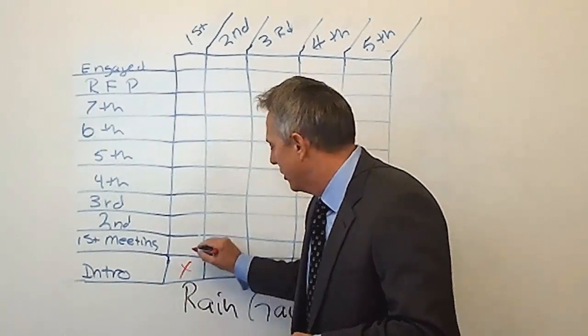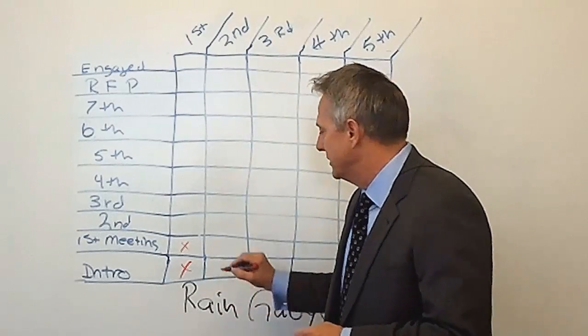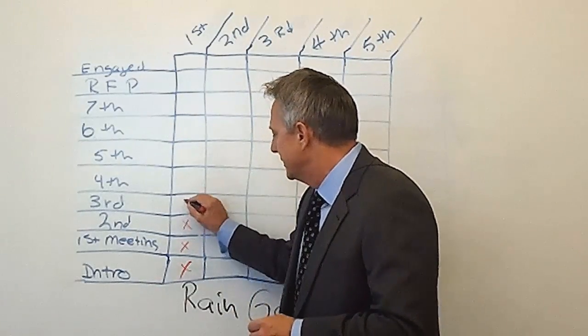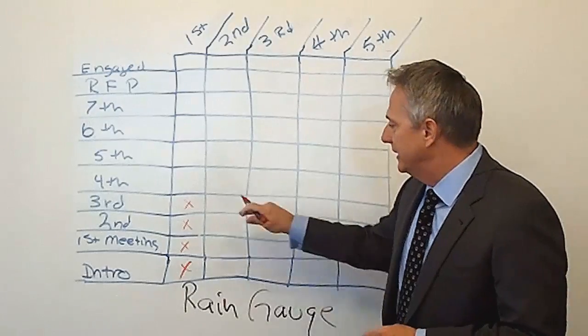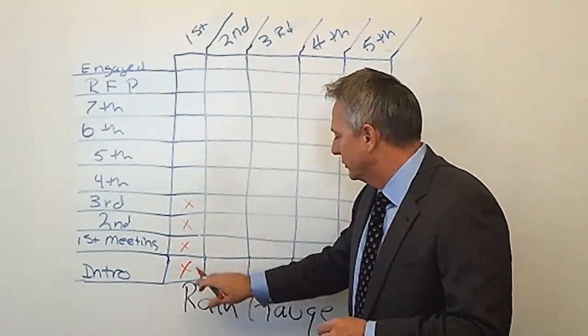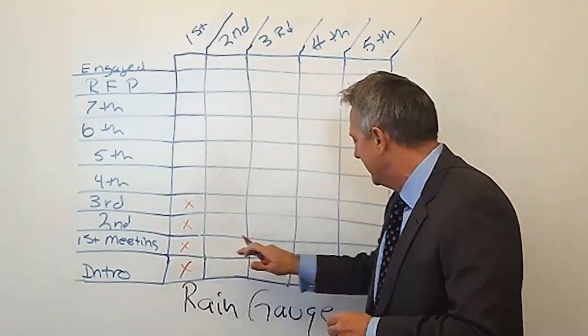So I've got my introduction here, I want to go out and visit their operations, maybe I take them to lunch, go play golf, something like that. Each one of these touches—and if you'll notice there's ten steps here and five prospects...